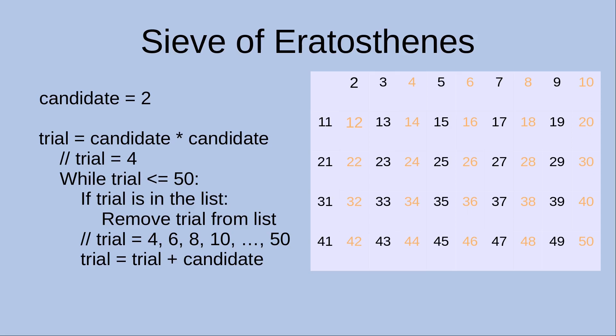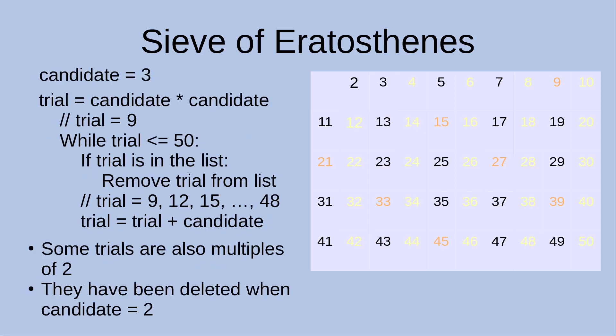The trial numbers are already shown in orange color on the right-hand side of the slide — these numbers are to be removed. The numbers removed by the previous step are shown in yellow. Now we test the next candidate, which is 3.